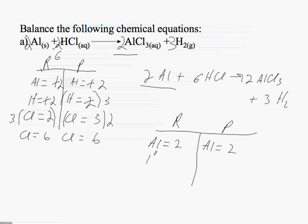On the reacting side, hydrogen is equal to 6. 3 times 2, hydrogen is equal to 6.